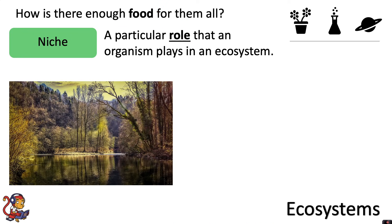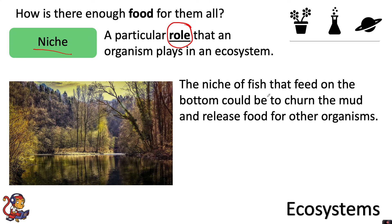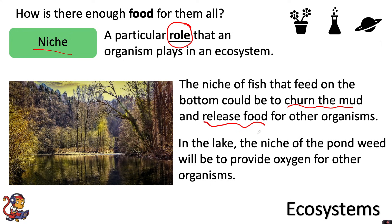Similarly, the organisms within the lake could occupy particular roles or particular niches. The niche of the fish that feed on the bottom could be to churn the mud and release food for organisms, and without them playing this role that would affect other species in this ecosystem. And in the lake, the niche of the pond weed will be to provide oxygen for other organisms — and again, without that you're not going to be able to sustain a large variety of different species co-existing together.